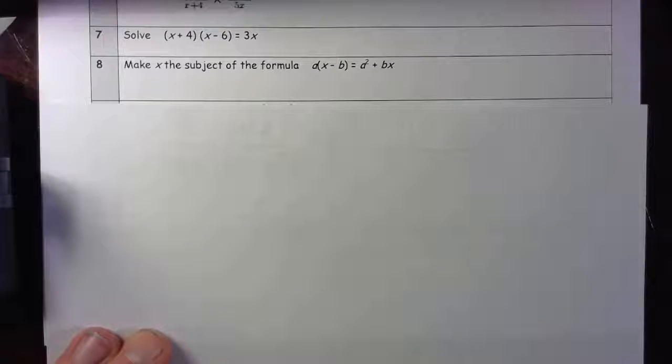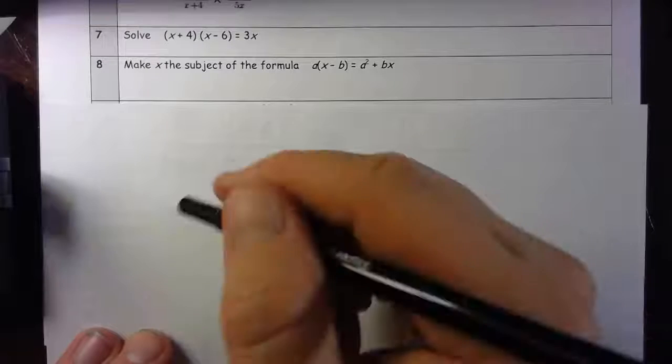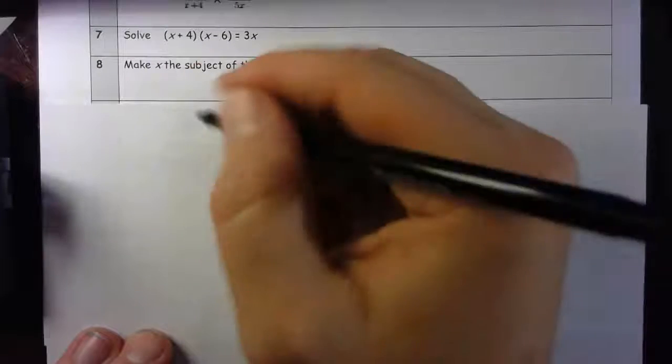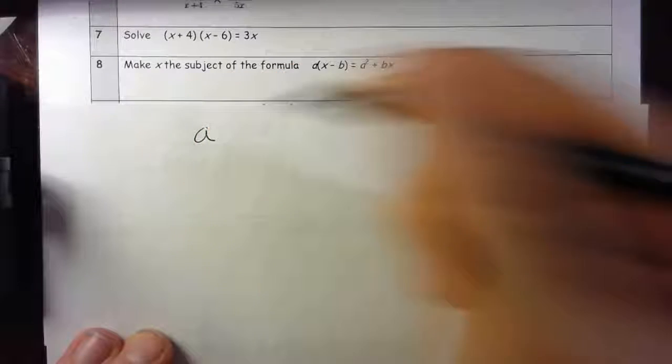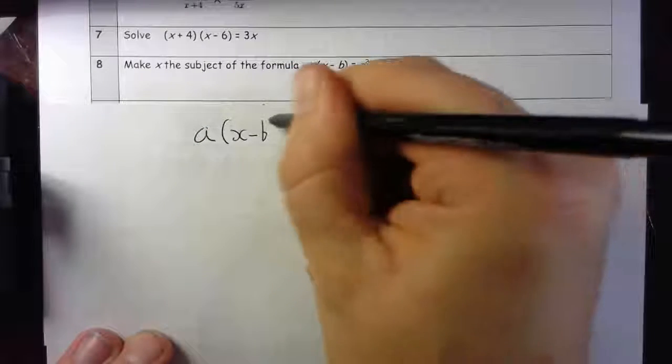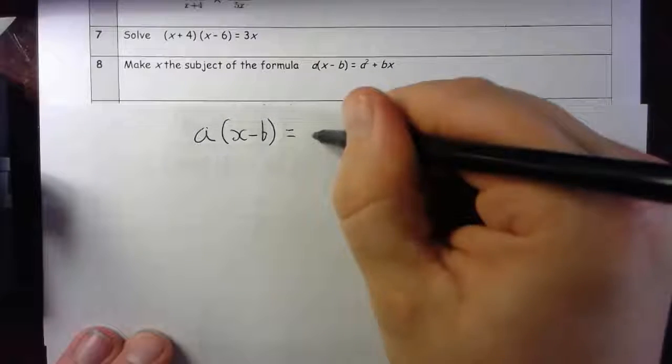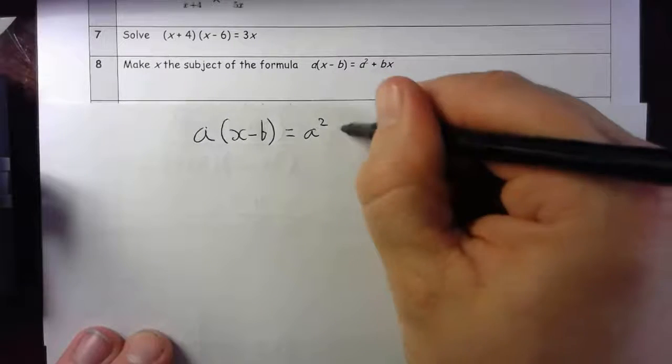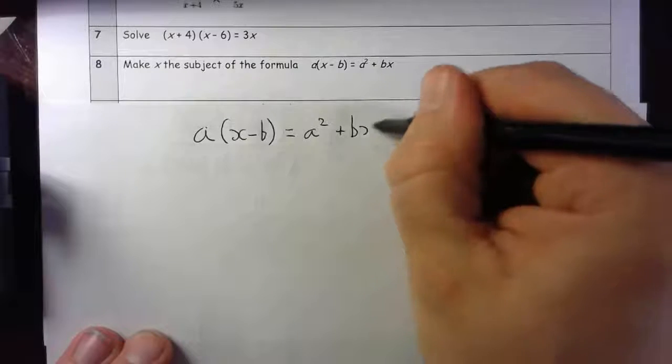Question 8. Make x the subject of the formula a(x-b) = a² + bx. I'll just rewrite that out. So a(x-b) is equal to a² + bx.